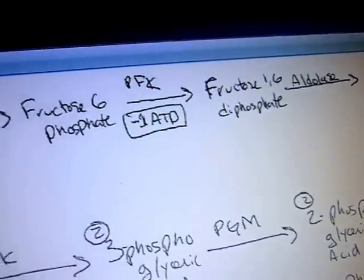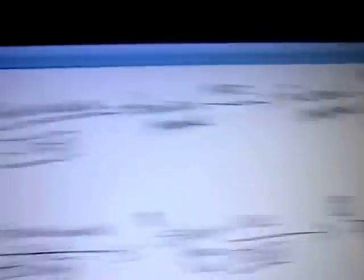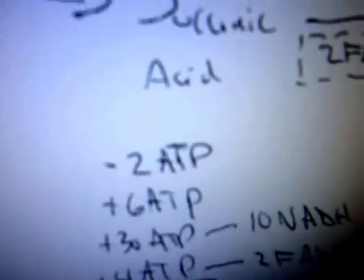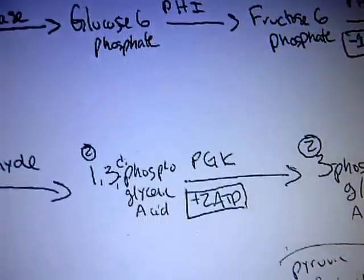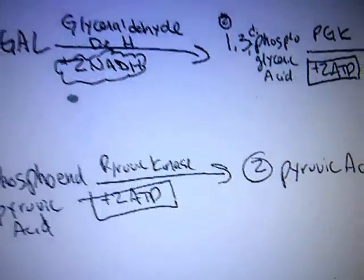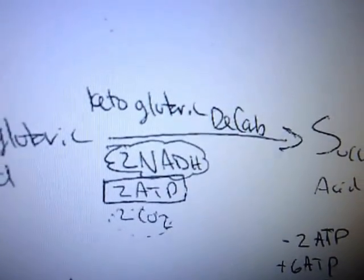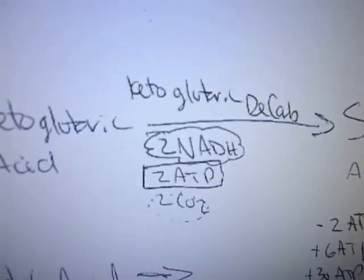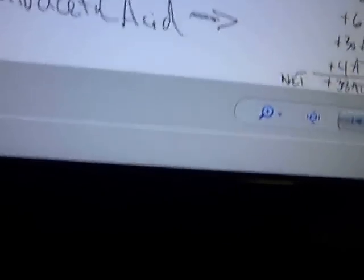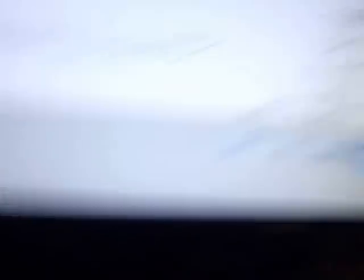So here we go with the total over here, negative two ATPs that we spent, one up here in the glucose kinase reaction, and the phosphofructose kinase, those are the two we came out, but then we gained six ATP, two in the phosphoglyceric kinase, two from the pyruvic kinase, two from the ketoglutaric decarboxylation, and that's six.